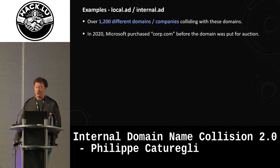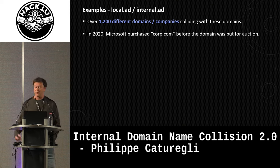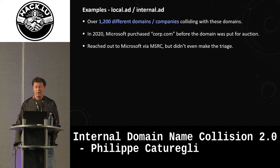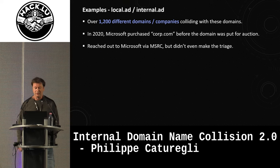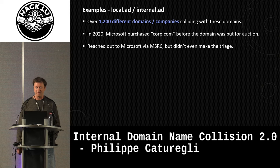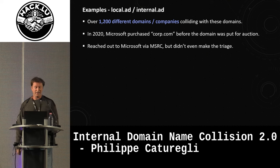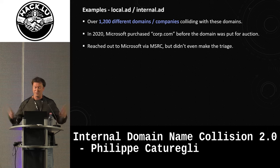In 2020, speaking to Brian Krebs, we learned that Microsoft actually purchased the corp.com domain before it was put to auction, because it was colliding with many companies' domains. We reached out to Microsoft via MSRC, but it didn't make it through triage — they said it's not a vulnerability. We asked for an official statement for this presentation, and they decided to reopen the ticket and transfer it to their DNS team. They emailed me yesterday, so I'll keep you posted.